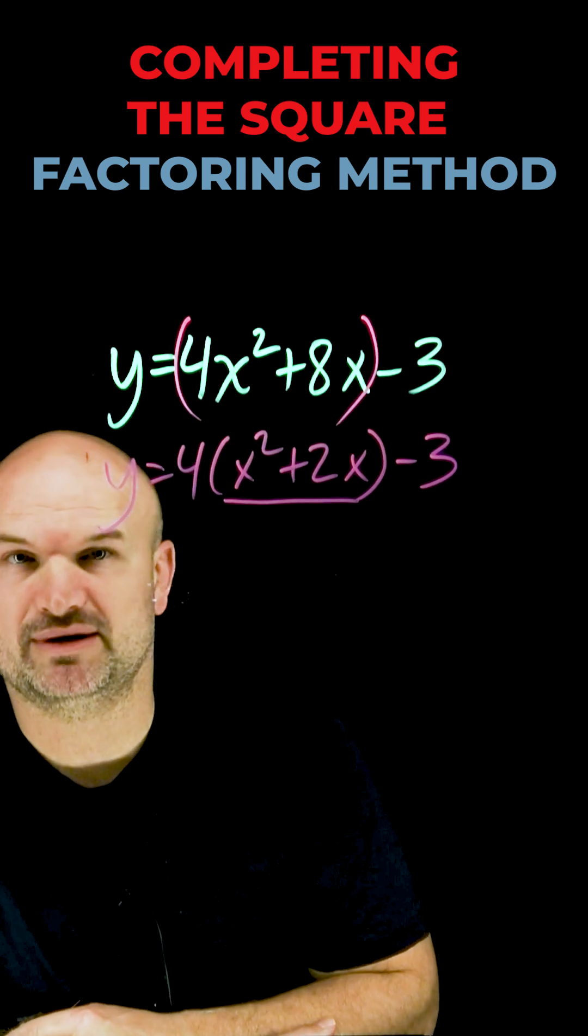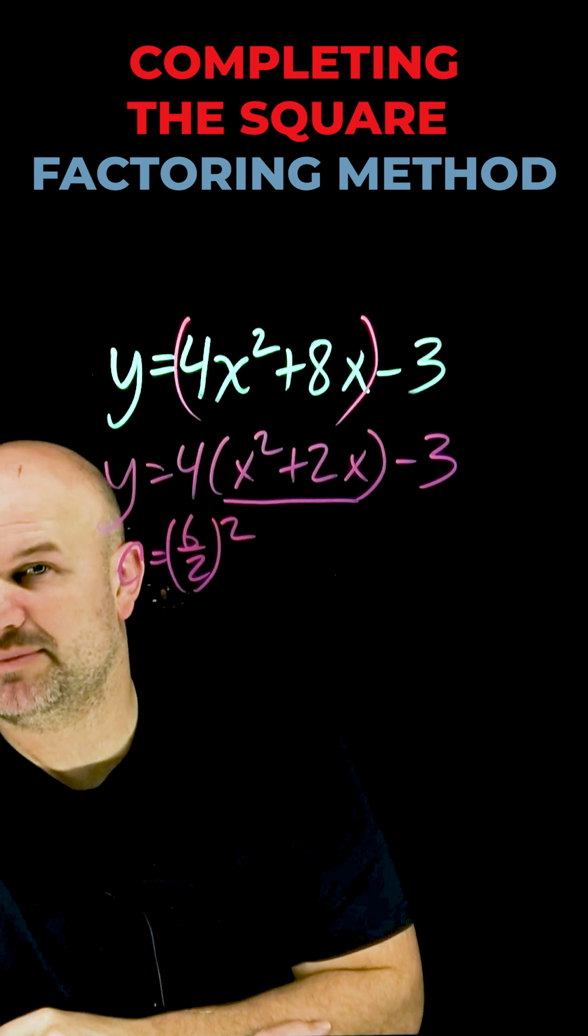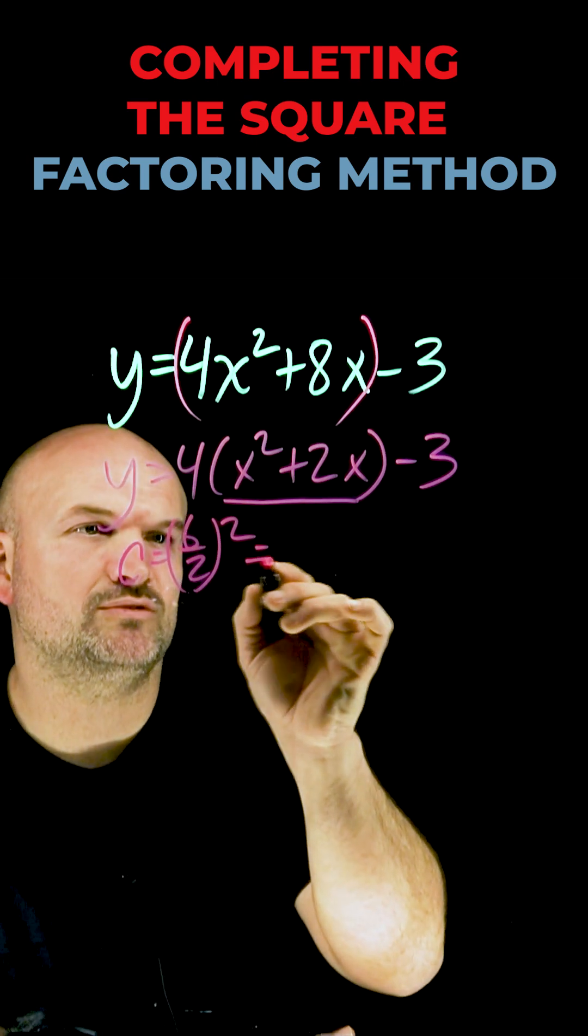The value of c is going to be b divided by 2 squared. So in this case, 2 divided by 2 is 1, 1 squared is equal to 1.